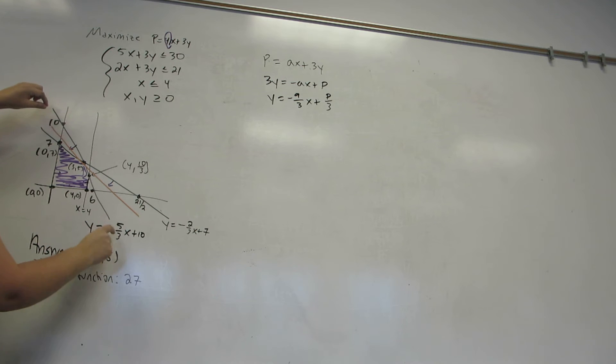I could wiggle it this way in which case I'd run into the line minus 5 thirds x plus 10. I could wiggle it that way in which case I'd run into the line minus 2 thirds x plus 7.